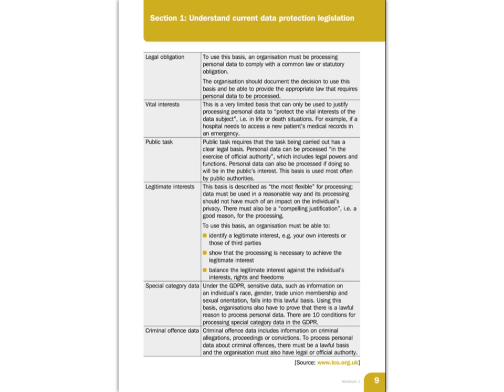If you have a legal obligation, you can also have criminal offence data — information on criminal allegations, proceedings or convictions. There must be a lawful basis and the organisation must also have a legal or official authority. For example, you could be asked for this information on a job reference, especially when working with children, but there must be an official authority to actually use that criminal offence data. You can't be asked for that sort of information just to get a pint in a pub.